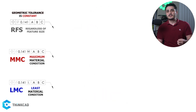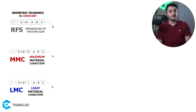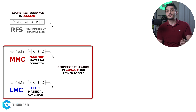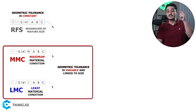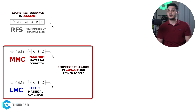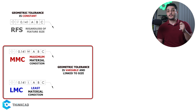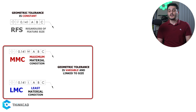When you place MMC or LMC modifiers in your GD&T feature control frame, you're basically linking your geometric tolerance to the size of the feature that they're applied to. This means our geometric tolerance will change depending on what size our feature is.